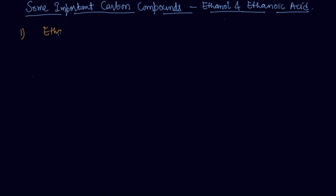So first we will discuss about ethanol. The formula for ethanol is C2H5OH or it can also be written as CH3CH2OH.